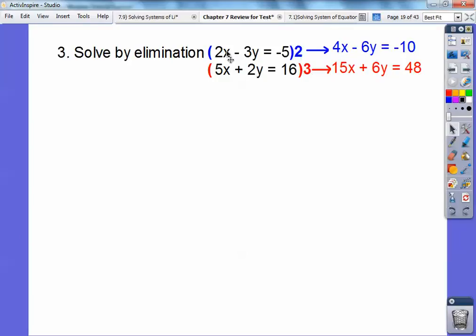But you had to put the 2 all the way through. 2 times 2x is 4x. 2 times -3y is -6y. And then 2 times -5 is -10. Similarly, distribute the 3 through. Now you're ready to add these equations together.